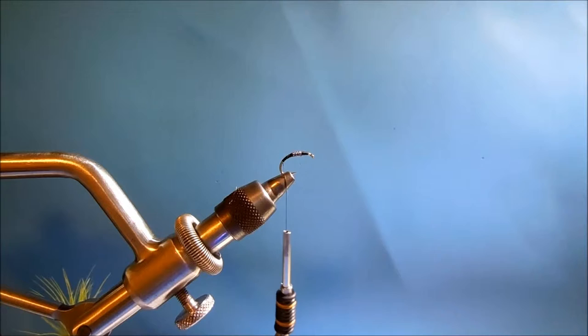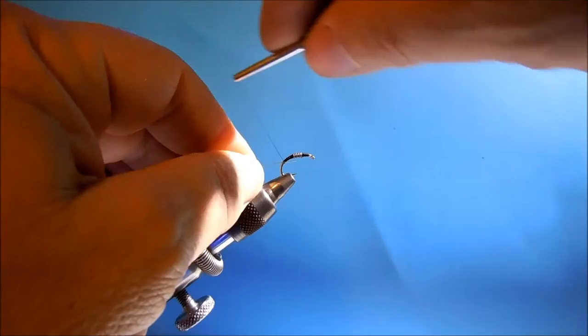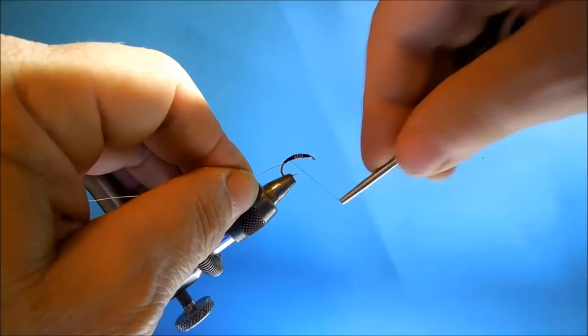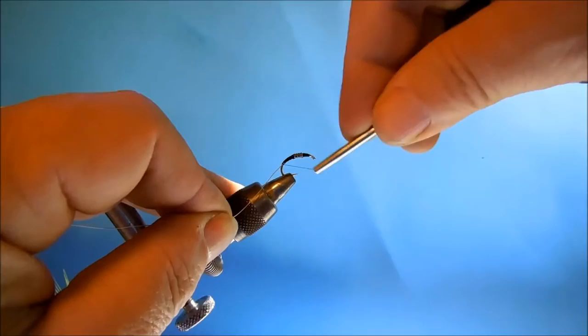We'll pop a bit of gold ultra wire in. And we'll just tie that in at the end there. Doesn't have to go all the way up the body. We're only using it for a rib anyway. We'll wrap down a little bit there.